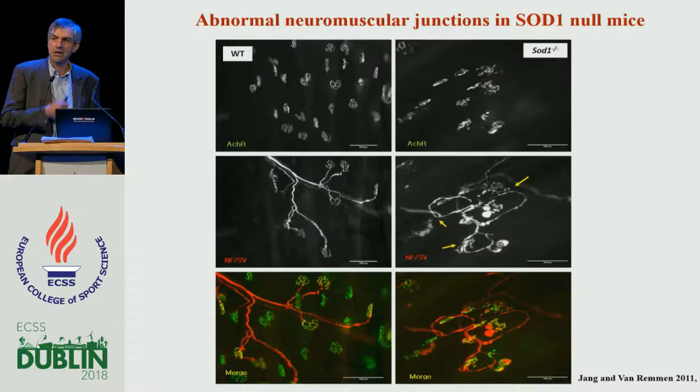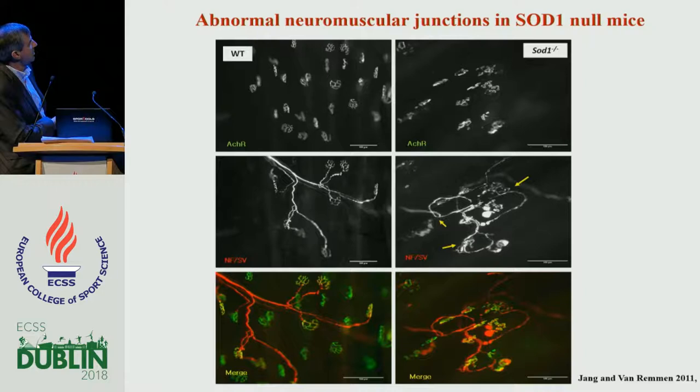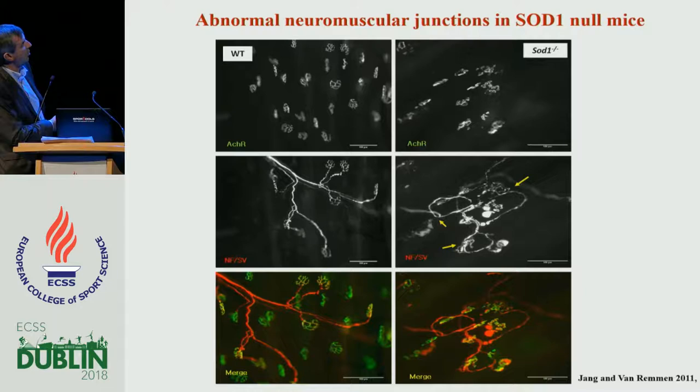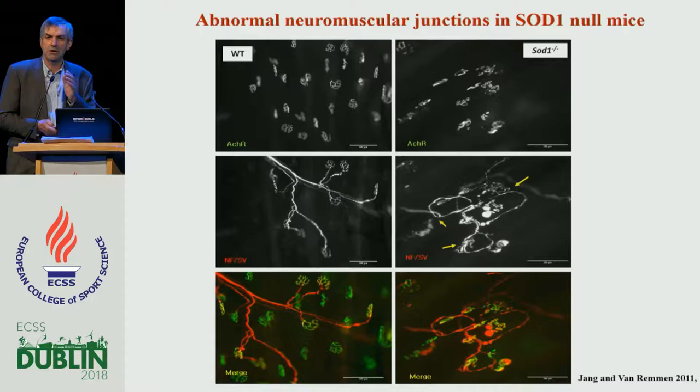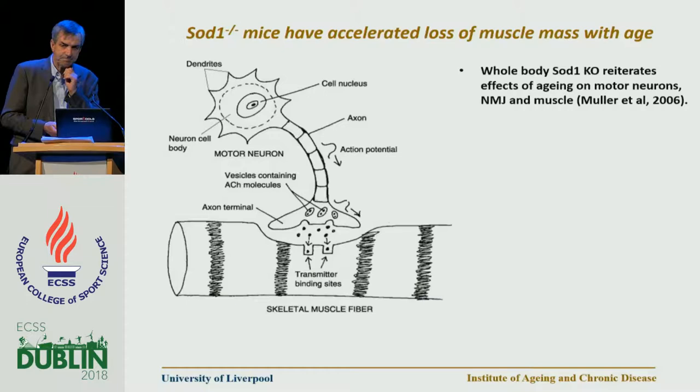SOD1 mutation is known to be one of the causes of familial motor neuron disease and seems to particularly affect the nerves. So we looked at the nerves and neuromuscular junctions of these animals — Holly Van Remmen did this work. In wild-type animals you see the nice pretzel-shaped acetylcholine receptor with nerves coming in and a very nice overlap. But in the SOD1 null mouse there's disruption of both the acetylcholine receptors and the nerves coming in. This threw us across to start looking at nerves.